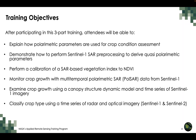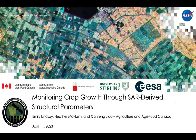After participating in this three-part webinar series, attendees will be able to explain how polarimetric parameters are used for crop condition assessment, demonstrate how to perform Sentinel-1 SAR preprocessing to derive quasi-polarimetric parameters, perform a calibration of a SAR-based vegetation index to the NDVI, monitor crop growth with multi-temporal polarimetric SAR data, examine crop growth using a canopy structure dynamic model with Sentinel-1 imagery, and classify crop type using a time series of radar and optical imagery.